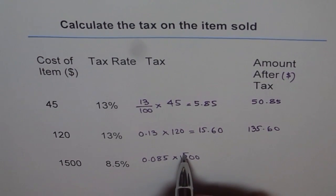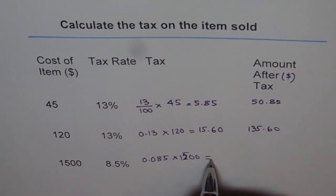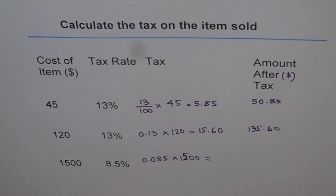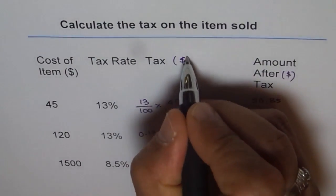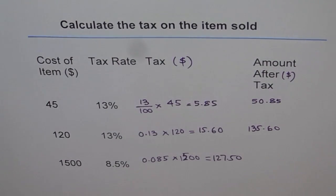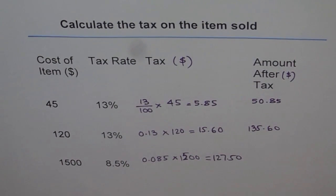Times 1500. So 1500 is equal to, let's use the calculator, 0.085 times 1500. What do you get? 127.50. So that is the tax in dollars. And the amount you pay is plus 1500, which includes the tax is 1627.50. So 1627.50.